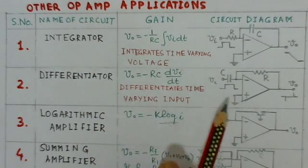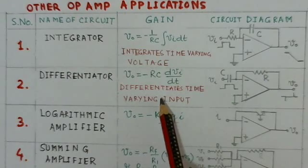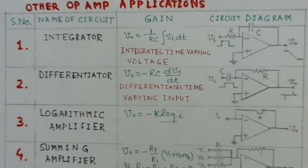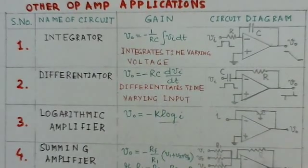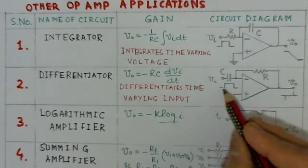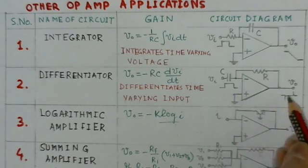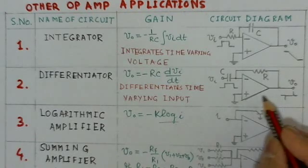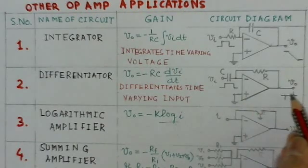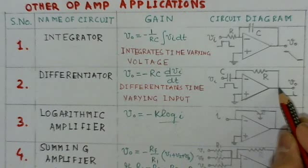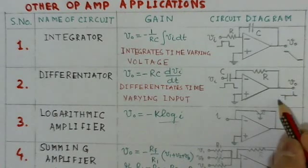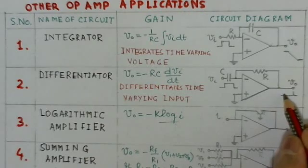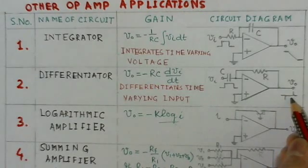The differentiator gives an output that is a differentiated version of the input. If a square wave or rectangular pulse is applied, spikes are generated at the output. An advantage of the op-amp differentiator over an RC differentiator is that its output source resistance is low, so it can easily interface with other circuits.